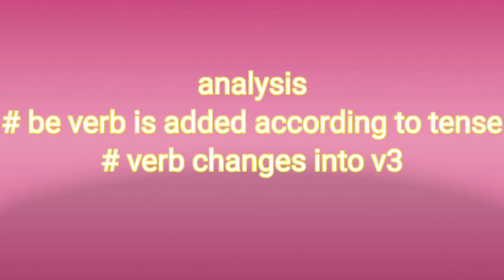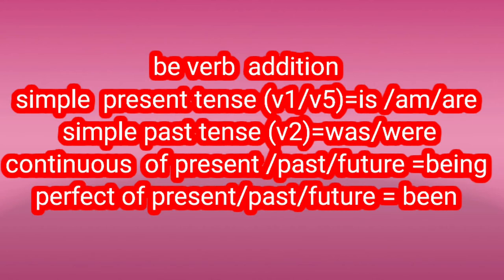Analysis: a be-verb (VVARP) is added according to tense and the main verb changes into V3. Passive means be-verb plus V3. For simple present and simple past tense, we use the appropriate be-verb. For continuous tenses (present, past, future), we add 'being.' For perfect tenses (present, past, future), we also add 'being.' Remember that table showing how to add the be-verb while changing active into passive.